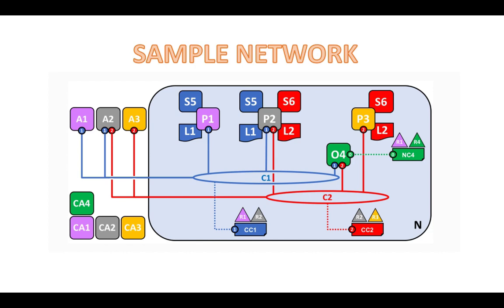Same way, channel C2 is governed according to the policy rules specified in the channel configuration CC2. The channel is under the control of organizations R2 and R3. You can also see there is an ordering service O4 that serves as a network administration point for the network and uses the systems channel.